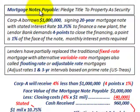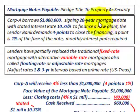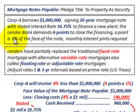We're going to be looking at mortgage notes payable. This is where you pledge title to property as security on a note or loan. For example, Corporation A borrows $1 million by signing a 20-year mortgage note with a stated interest rate of 10.75% to finance a new plant. The lender bank demands four points to close the financing, and a point is 1% of the face value of the note.